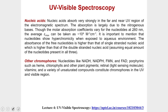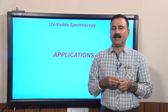Apart from that, you have other chromophores like nucleotides such as NADH, NADPH, FMN, FAD, porphyrins such as heme, chlorophylls and other plant pigments, retinol — which is a light-sensing molecule — vitamin A, and a variety of unsaturated compounds that constitute chromophores in the UV as well as visible range. This is all about UV visible spectroscopy — the phenomena of absorption and the Beer-Lambert law. In the subsequent lecture we are going to discuss the applications of UV visible spectroscopy and then IR spectroscopy. With this I would like to conclude our lecture, thank you.